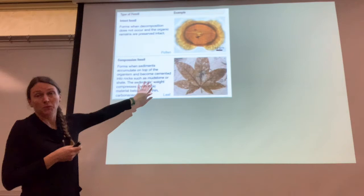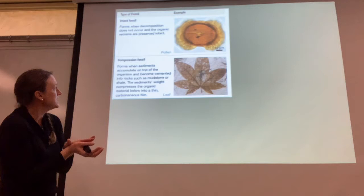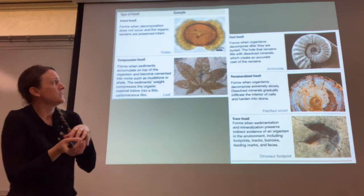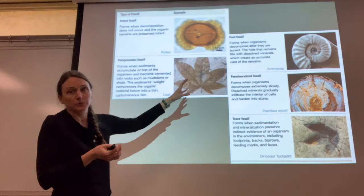We have compression fossils — these are what we're mostly going to see with insects — where sediments accumulate on top of the organism and it becomes cemented into stone, then compresses into a thin film that's no longer the organism but now made of stone. There are also casts, where organisms decompose and the hole that remains is filled with minerals. A lot of shelled marine organisms are cast fossils.